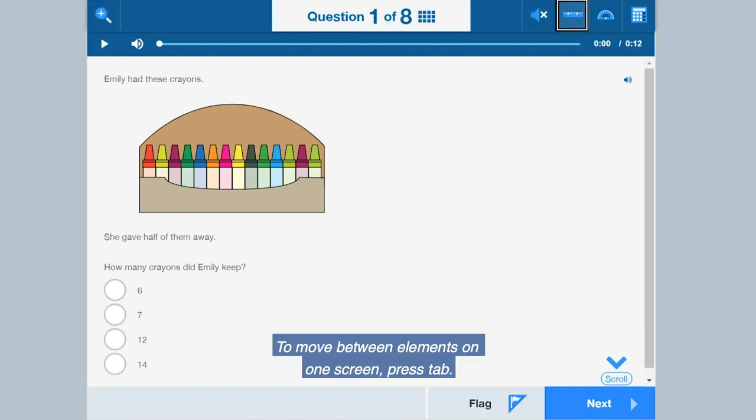To move between elements on one screen, press Tab. To move in the opposite direction, press Shift and Tab.